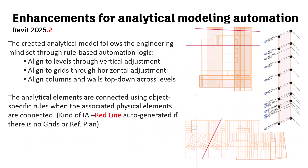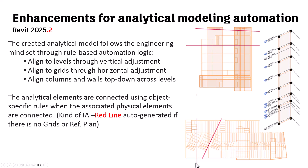The AI will analyze the selection you want to create the analytical element from, and it will find alignment lines. If there are grids, it will align on grids or reference planes. If there are none, it will create what I would call fake axes to align on — you can see these in red, in elevation or in plan view.